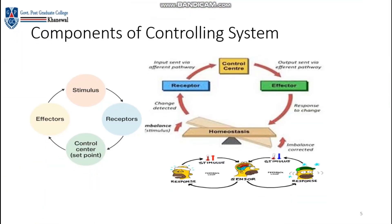Components of the controlling system — there are basically three main components: first receptors, then control center, and then effectors. Any change coming in the environment is in the form of a stimulus. The body parts that detect the stimulus are receptors. After receptors, the message goes to the control center, which then conveys it towards the effectors.